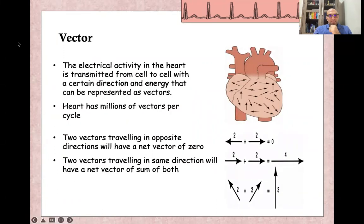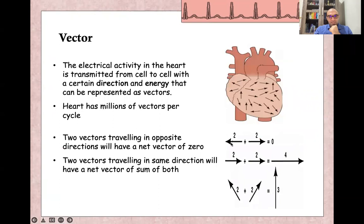A vector means the electrical activity in the heart which is transmitted from cell to cell with a certain direction and certain energy. The heart actually has millions of vectors. When adding these vectors together, it is done according to direction and energy. If two vectors travel in opposite directions, this will give a net vector of zero. If two vectors travel in the same direction, the net vector is the sum of both. If they are in almost the same direction but differ on one axis, this gives a midway net vector, as shown in the example here.